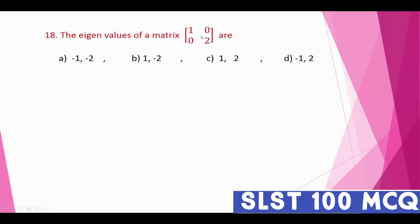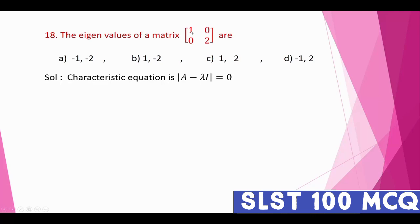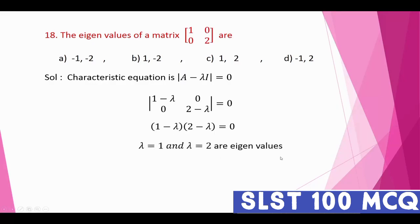The eigenvalues of the matrix [[1,0],[0,2]] are found using the characteristic equation det(A − λI) = 0. Subtracting λ from the diagonal: (1 − λ)(2 − λ) = 0, giving λ = 1 and λ = 2. The correct answer is option C: eigenvalues are 1 and 2.